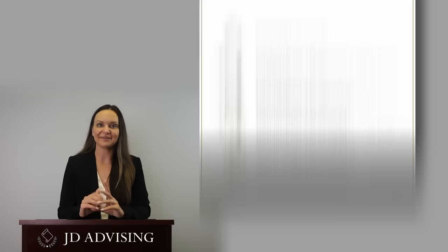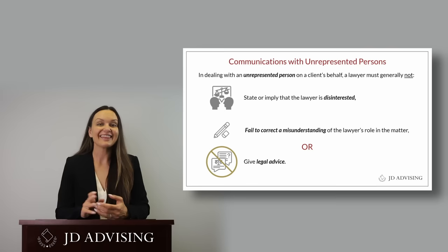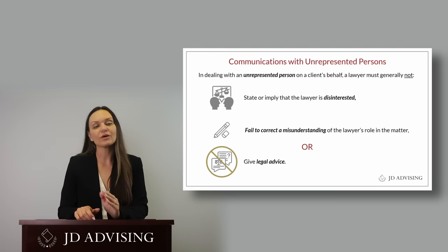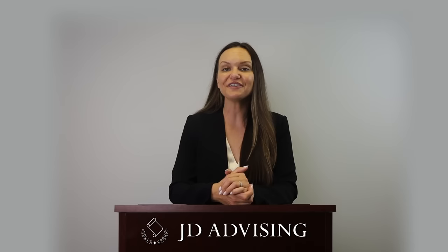The final rule under this subsection is communication with unrepresented people. Lawyers can communicate with those not represented, but they cannot state or imply that they are disinterested in the matter. A lawyer cannot call the unrepresented opposing party and say 'I just want what's best for everyone,' because that implies disinterest — and the lawyer is very much interested by virtue of their representation of the other party.